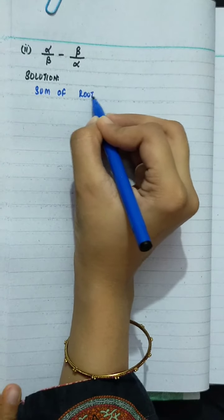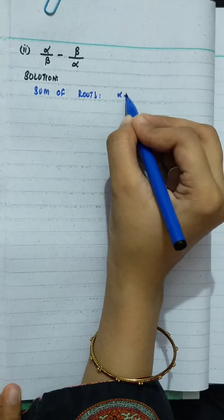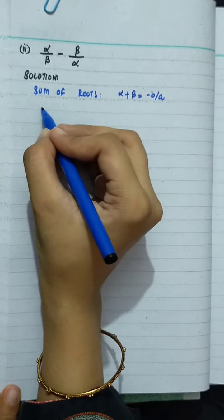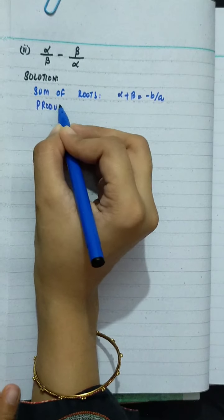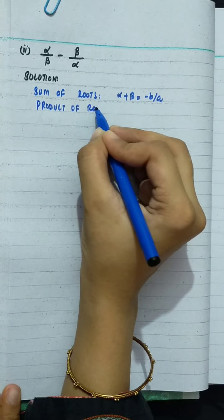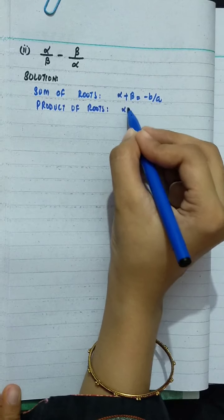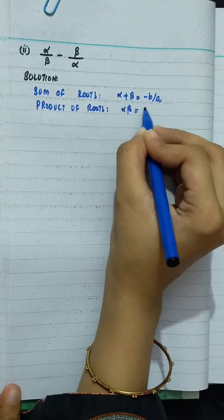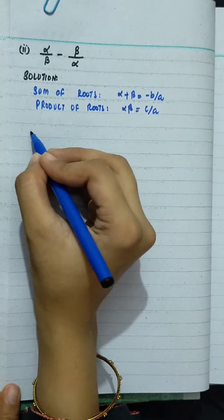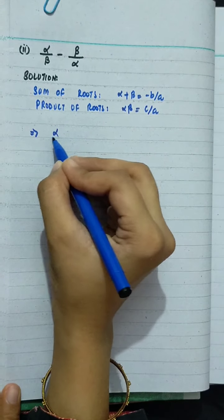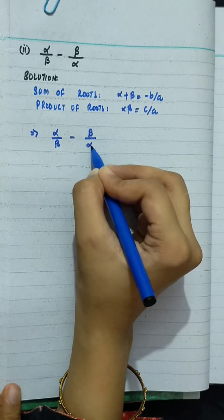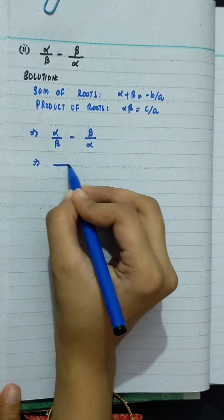Sum of roots: alpha plus beta is minus b over a. Product of roots: alpha times beta equals c over a. We need to find the value of alpha over beta minus beta over alpha.